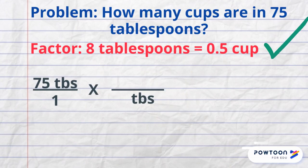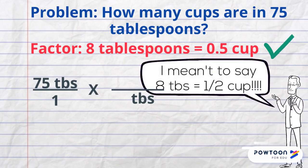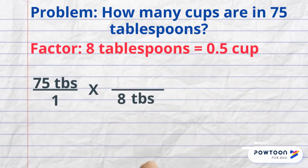Our factor is eight tablespoons equals one half cup. So the number eight goes in the denominator next to tablespoons and one cup goes in the numerator. Cancel units and solve.